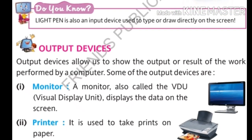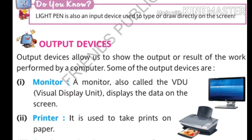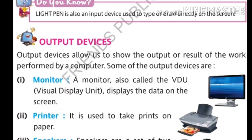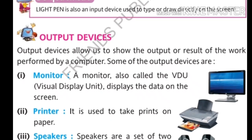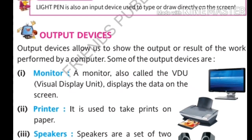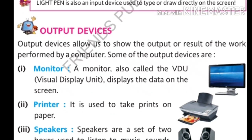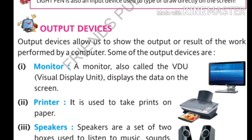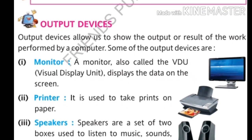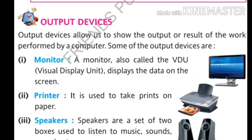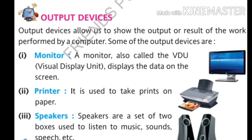The monitor is also called VDU — Visual Display Unit. It displays data on the screen. Next is the printer, which is used to take print on paper. Next is the speaker. Speakers are a set of two boxes used to listen to music, sound, speech, etc.